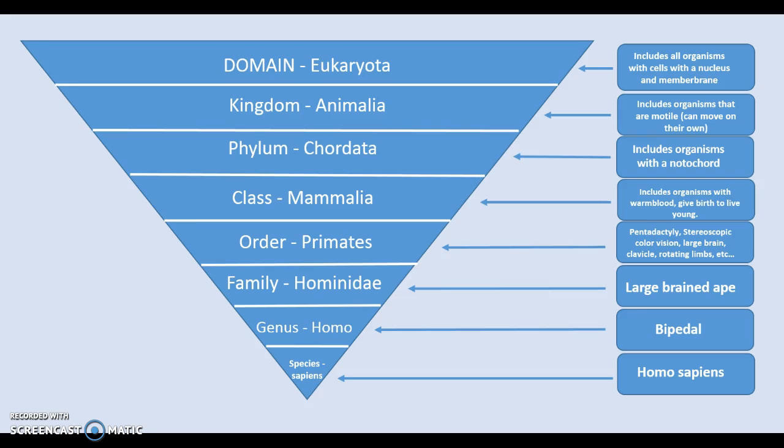The order primates is further sorted into different families and humans actually fall into one of the families, Hominidae, which is a small category that really only has in it what they call large brain apes. So they are primates with large skeletons, large brain. There really are only a few animals that fall within Hominidae. And those animals are humans, and chimpanzees, mountain gorillas, they fall in the category of Hominidae.